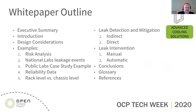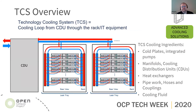For the white paper, we give quick introductions and design considerations, then go into specific examples which we're still working on. After that, we cover leak detection, mitigation, and leak intervention. The overview specifically covers the TCS secondary liquid loop: cold plates, integrated pumps, manifolds, cooling distribution units, heat exchangers, heat pipes, pipe works, hoses, couplings, and the cooling fluid itself.